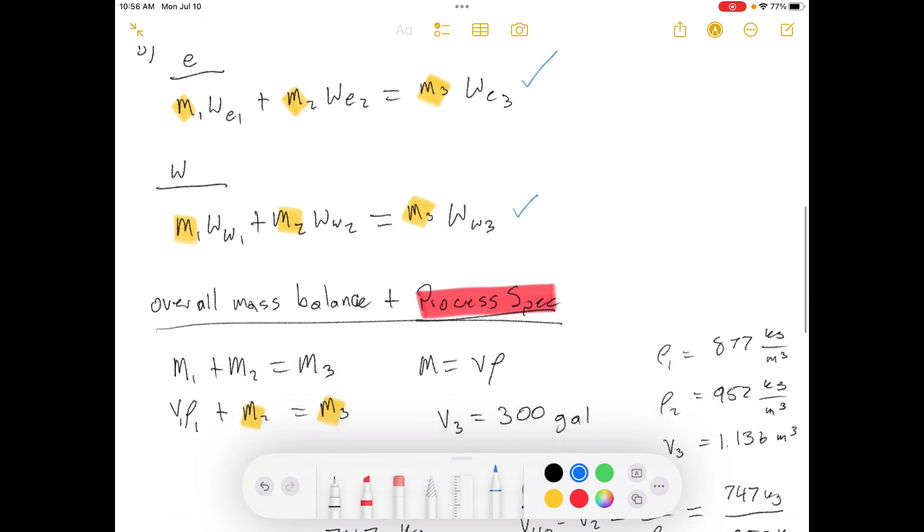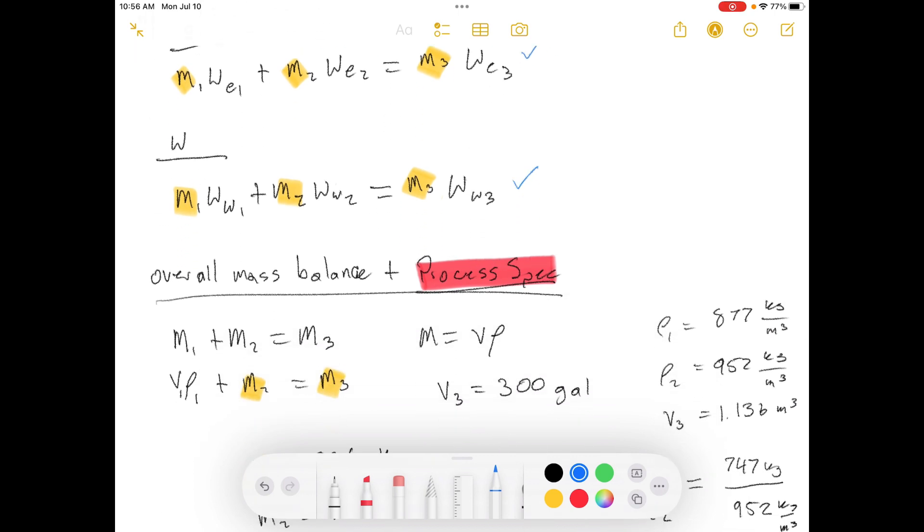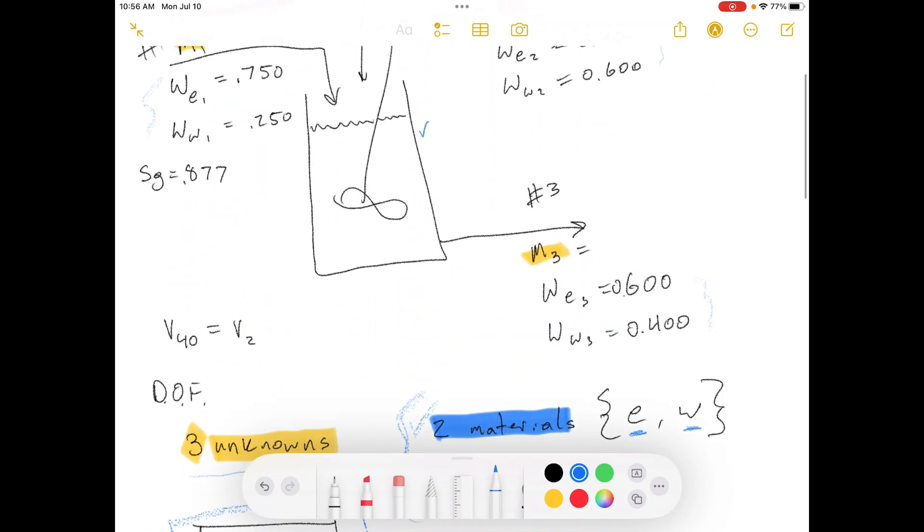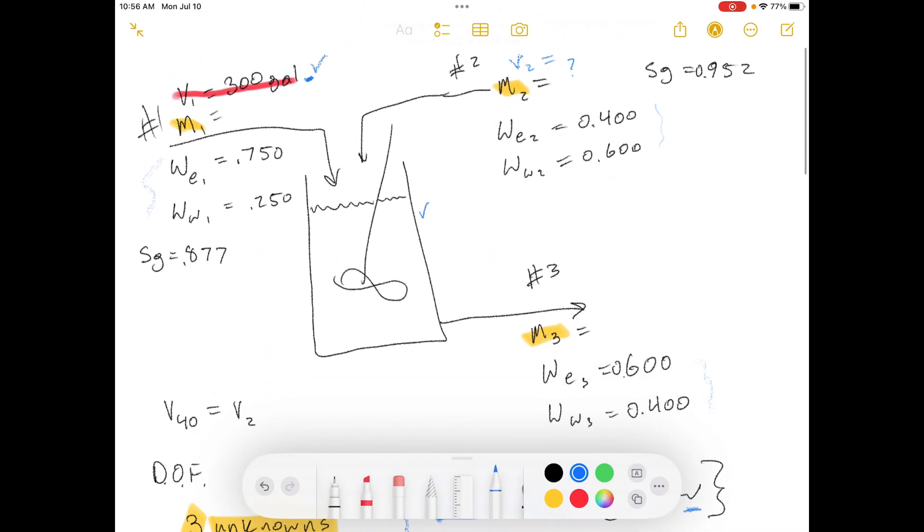Now it might be a little tricky as to how to proceed from this next part, but the correct way to do it, I believe, is to do an overall mass balance and then add in the process spec. That gives you the process spec surrounded by information that makes it a little more useful as it pertains to this mixing process, because if you just try and use this problem or this equation, it's kind of hard to see how it relates to the overall mixing process.